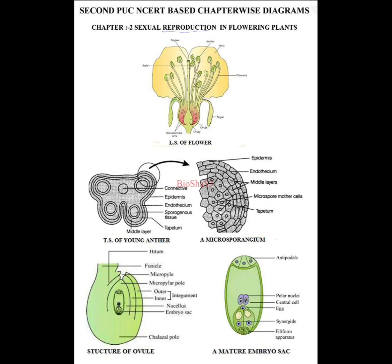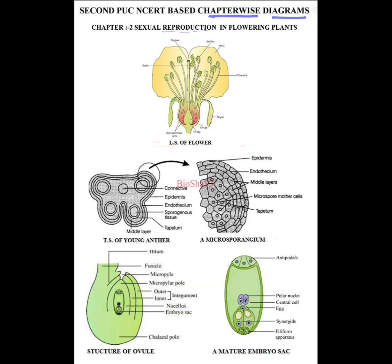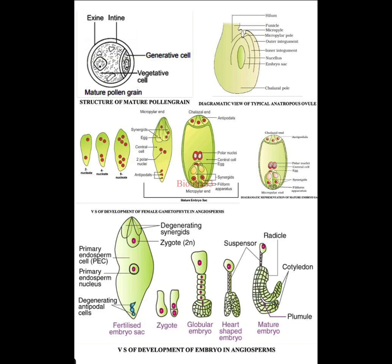Welcome back. In this video on second PUC, we cover important diagrams from Chapter 2. You can see the LS of flower, which can be asked for five marks, and the TS of anther, section enlarged — this is a microsporangium. You have to practice this. Then the structure of ovule you have to explain along with the diagram, or sometimes the diagram alone could be asked. Then a mature embryo sac — also a very important diagram you have to practice.